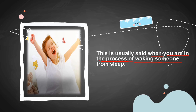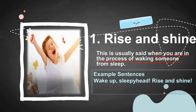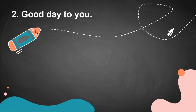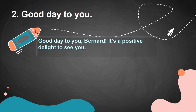Let's begin different ways to say good morning. The first phrase is 'Rise and shine' — this is usually said when you are in the process of waking someone from sleep. For example: 'Wake up, wake up, sleepy head — rise and shine!' Second: 'Good day to you.' For example: 'Good day to you, Bernard — it's a positive delight to see you!'